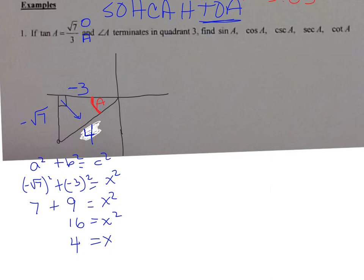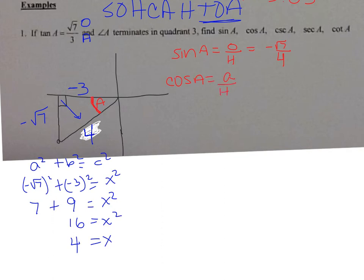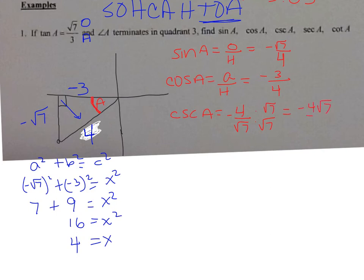Now I want to find the remaining trig functions. Sine A: sine is opposite over hypotenuse, so opposite A is negative square root of 7 over the hypotenuse, which is 4. Cosine A: cosine is adjacent over hypotenuse, so adjacent is negative 3 over 4. We already have tangent. For cosecant A — cosecant is the reciprocal of sine — flip sine to get negative 4 over square root of 7. Rationalize the denominator by multiplying by square root of 7, giving negative 4 square root of 7 over 7.